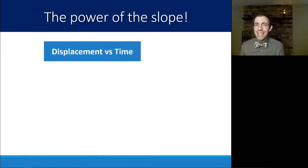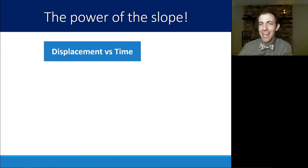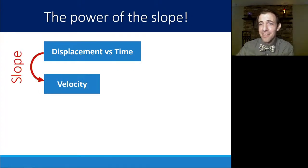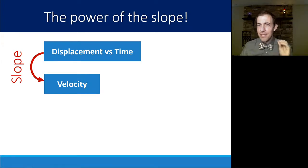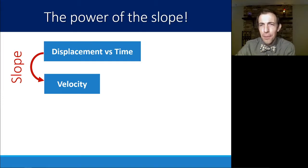If we have a displacement versus time graph — meters on the y-axis and seconds on the x-axis — the slope will always give us meters divided by seconds, which is the velocity. So if you have a displacement versus time graph, you can find and calculate its velocity just by calculating slope.